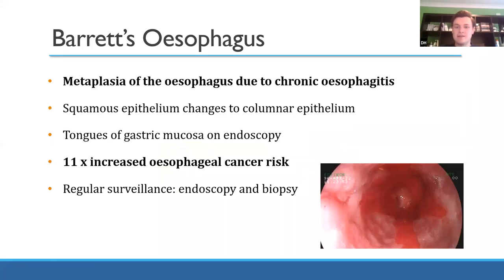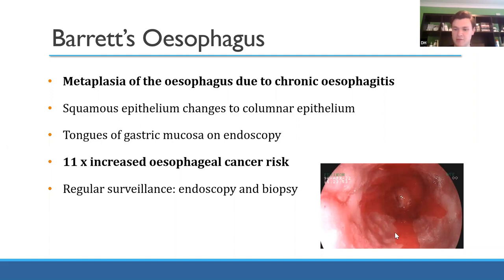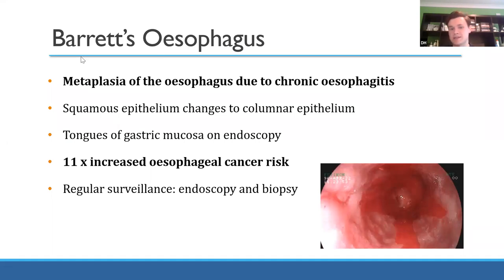Barrett's esophagus is the eponymous name for this metaplasia of the esophagus. Because of chronic esophagitis from constant acid exposure, the esophagus changes from squamous to columnar epithelium. On endoscopy you see characteristic tongues of mucosa — one type interspersed with the other. By itself it's not catastrophic, but over time there's a risk of dysplasia progressing to cancer.